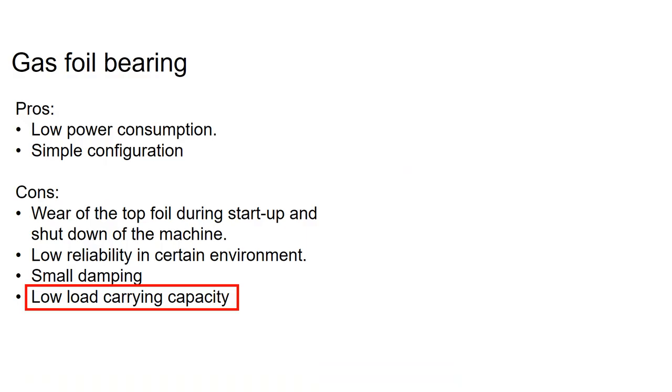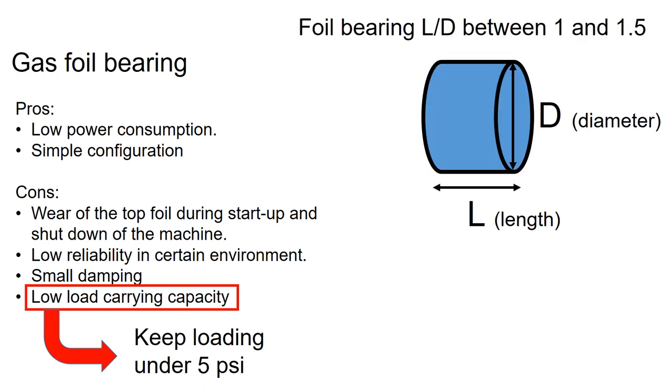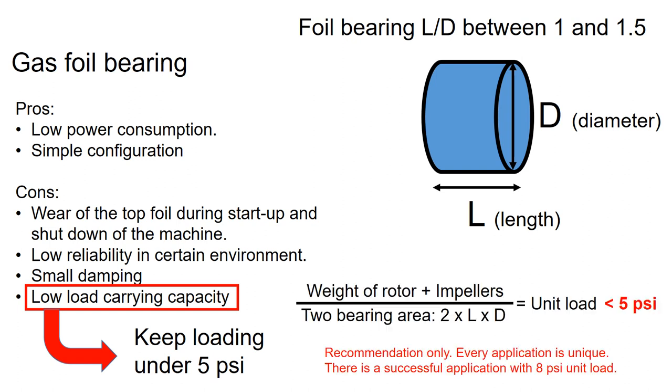The gas foil bearing also has low load carrying capacity. So keeping the unit load under 5 psi is recommended. To understand the unit loading, you need to understand the bearing area, which is defined by its length times the diameter. Now, divide the weight of the rotor and impeller by the bearing area, which gives the unit load.